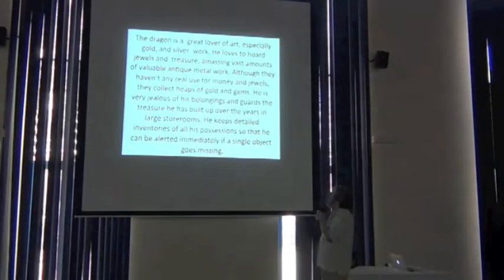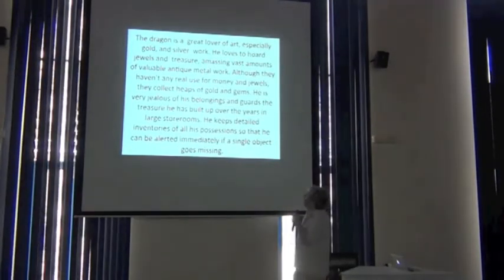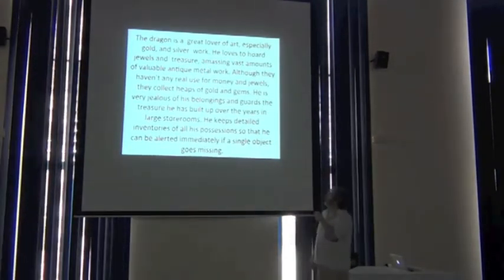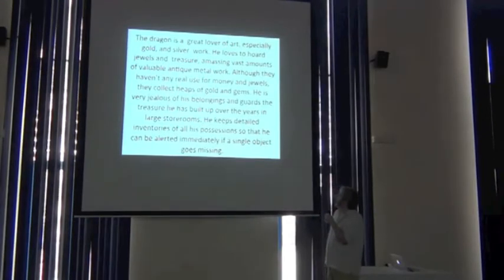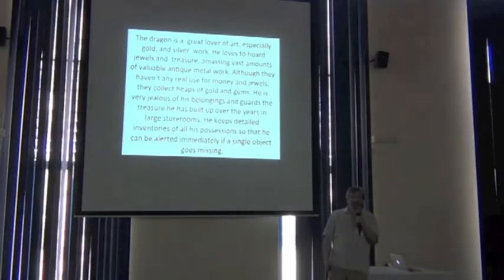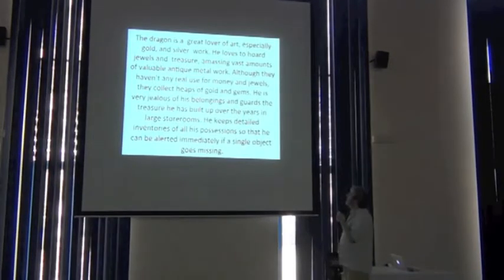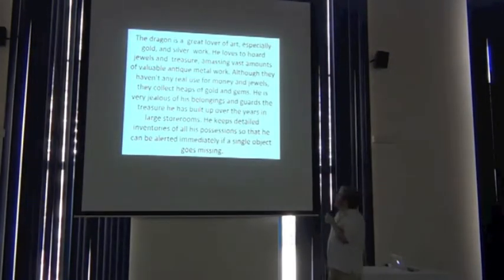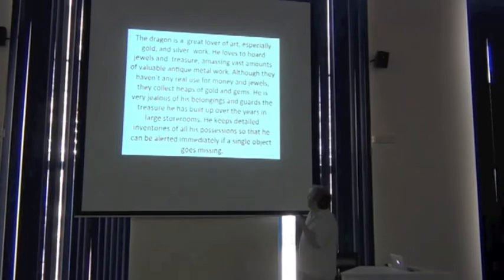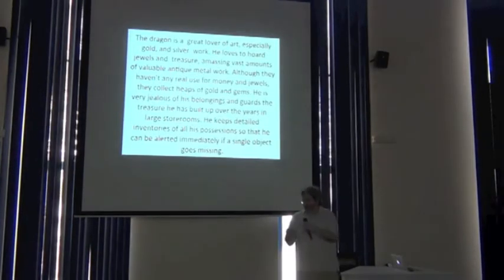He, the dragon, is very jealous of his belongings and guards the treasure he's built up over the years in large star wars. He keeps detailed inventories of all of his possessions. Does that sound familiar? So that he can be alerted immediately if a single object goes missing.